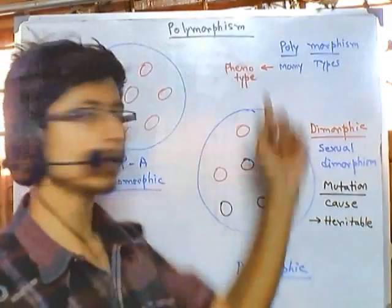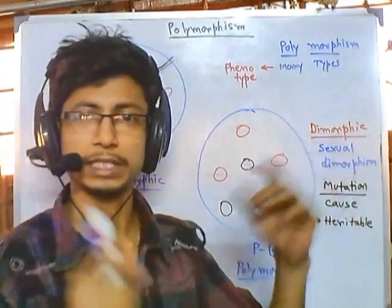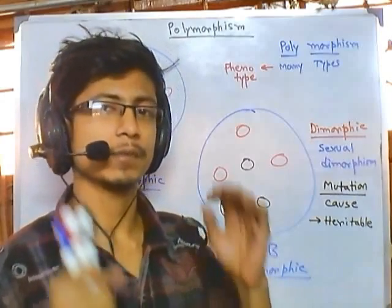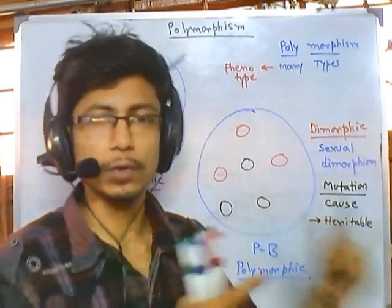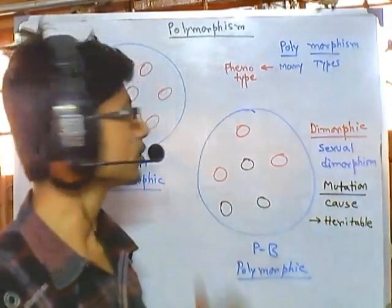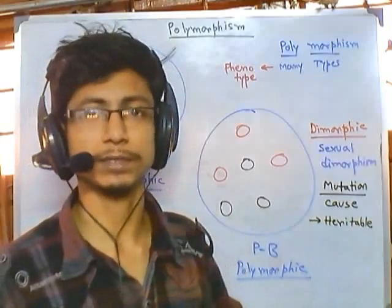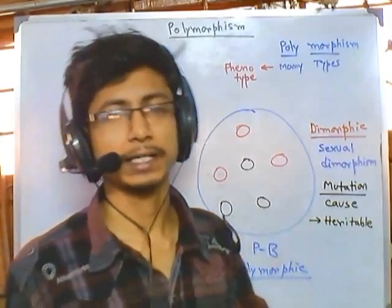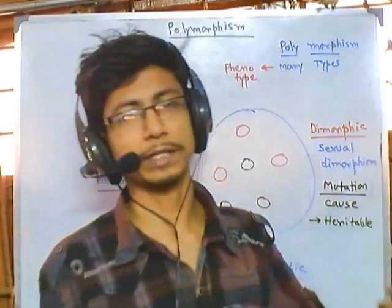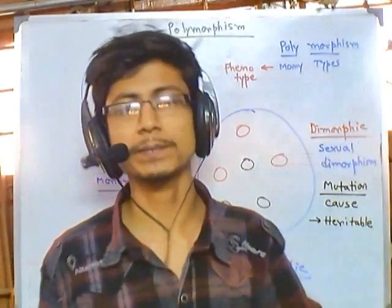We can compare this polymorphism from population to population, even from person to person and across different generations. By looking at it, we can tell it provides a unique pattern of flow of information. Modern day, we can use many techniques to find polymorphism, especially genetic polymorphism, and you can find videos on the different techniques used to account for this polymorphism.